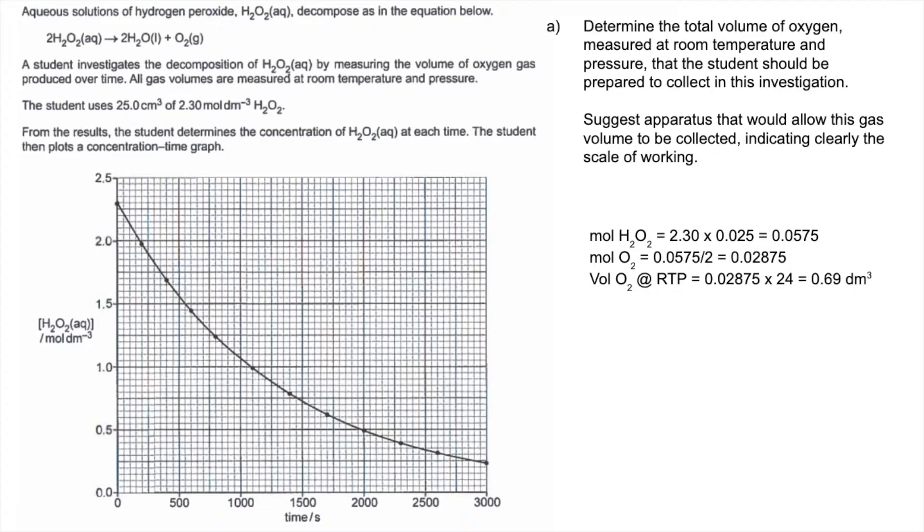So what sort of apparatus could the student use to collect that? They could use a 1000 cm³ gas syringe, having said that I've never seen a gas syringe that big. Or you could use a 1000 cm³ measuring cylinder. Remember that would be collected over water, and the measuring cylinder would be upside down filled with water. The oxygen as it's produced would displace the water. Either of those answers would be fine.